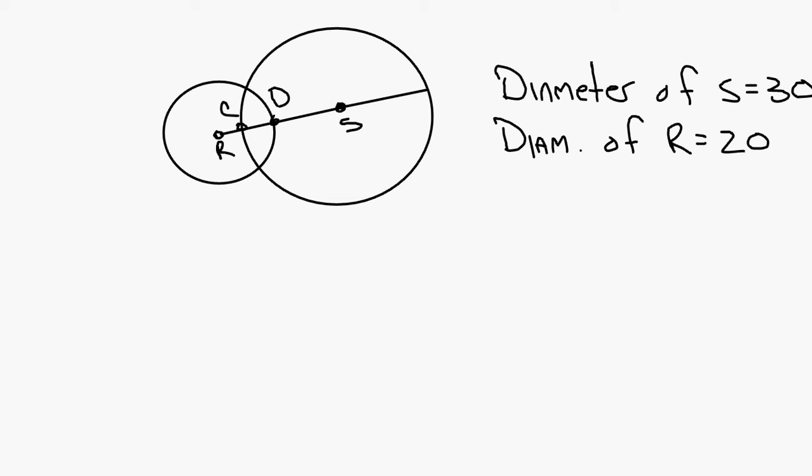And then we've got R, C, D, S. So point R, point C, point D, and point S. And the diameter of S is 30. So diameter of S equals 30. Diameter of R is 20. Diameter of R equals 20. D to S equals 9. Find C to D.